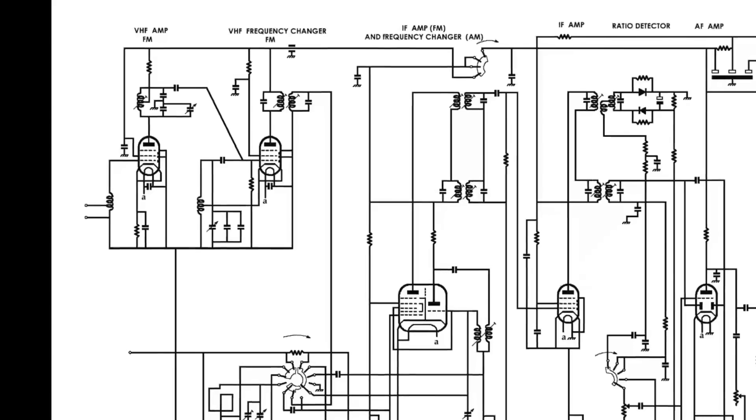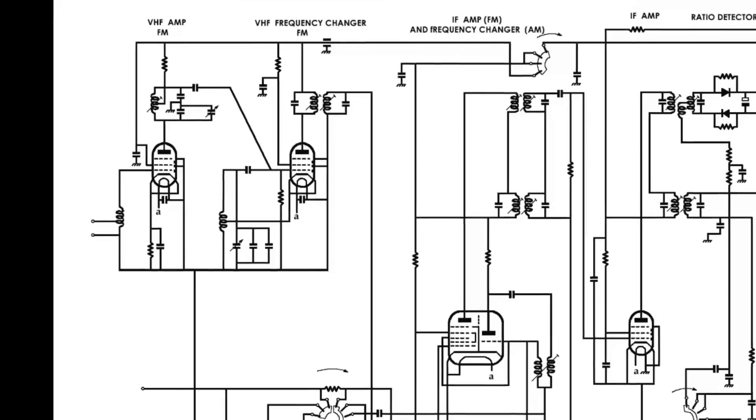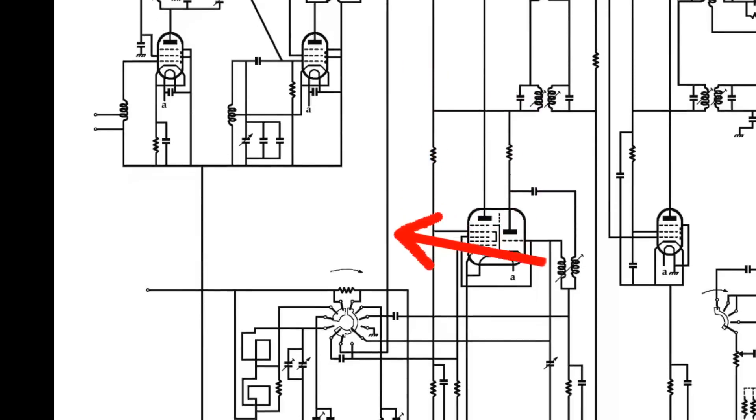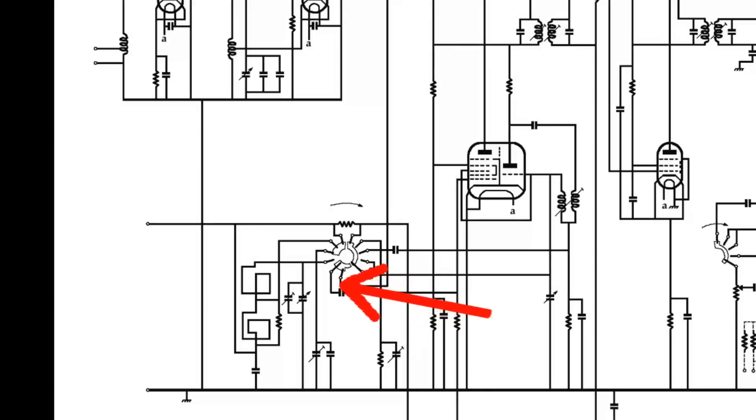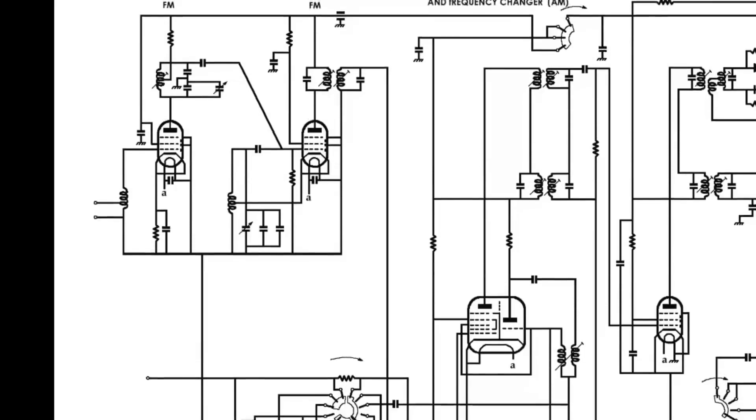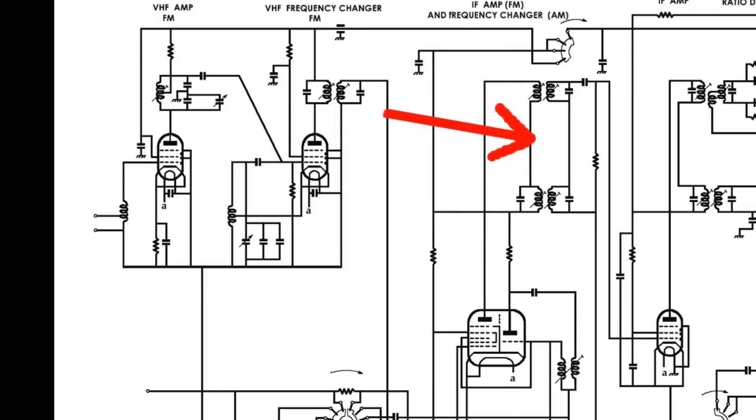The FM intermediate frequency is taken from the top of the first IF transformer for the VHF section and it comes down to the wave change switch and from here it's routed through to the grid one of V3. The output of V3 is connected in series with both primaries for the first AM IF transformer and the second FM IF transformer. The FM transformer is the one at the top.